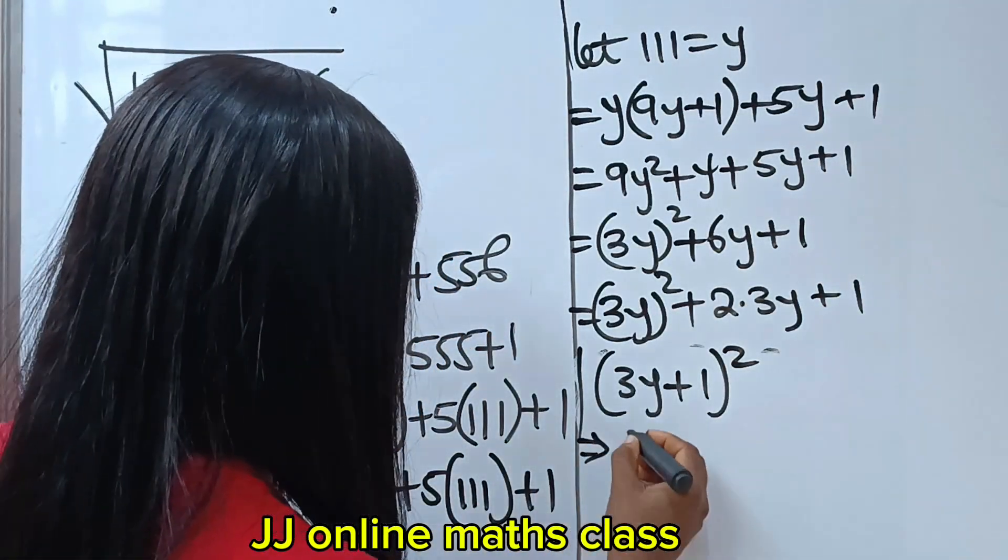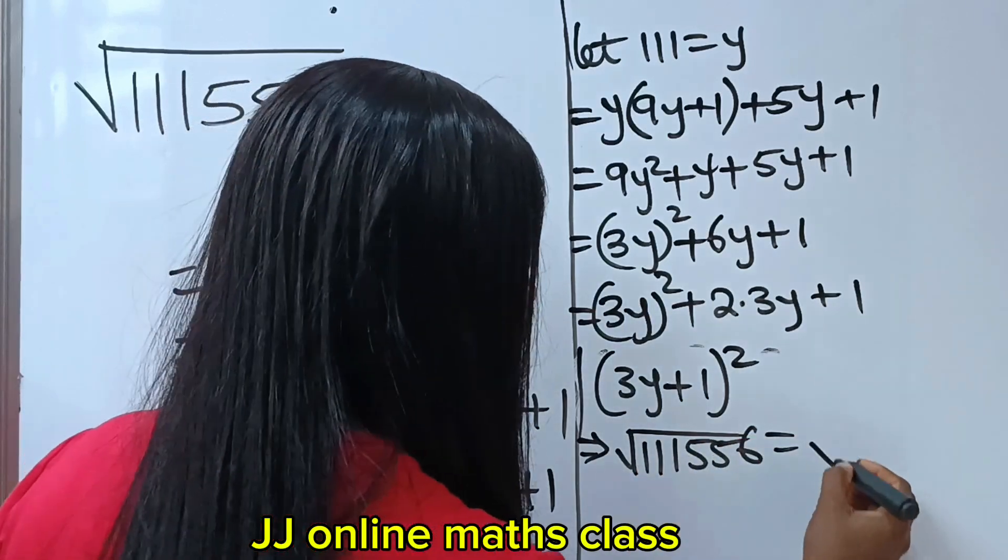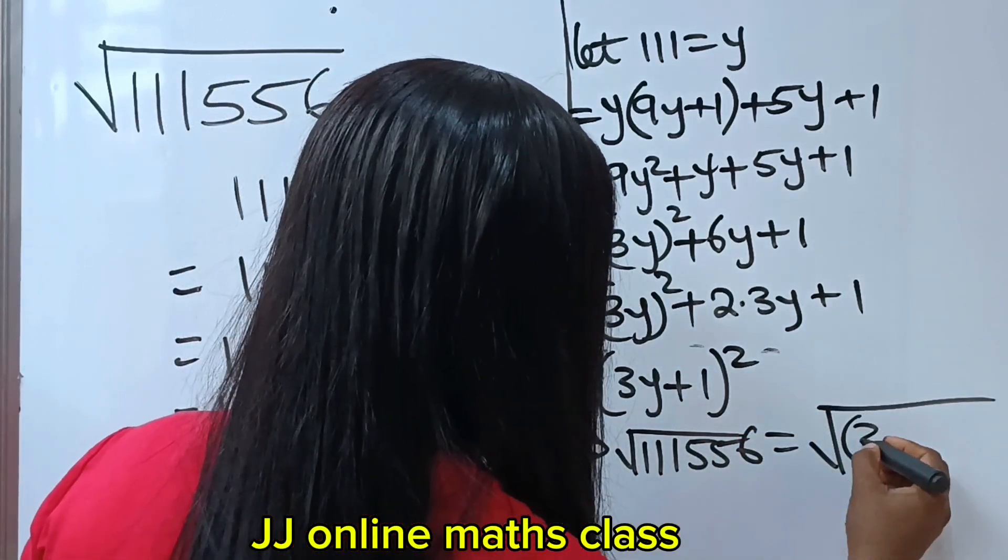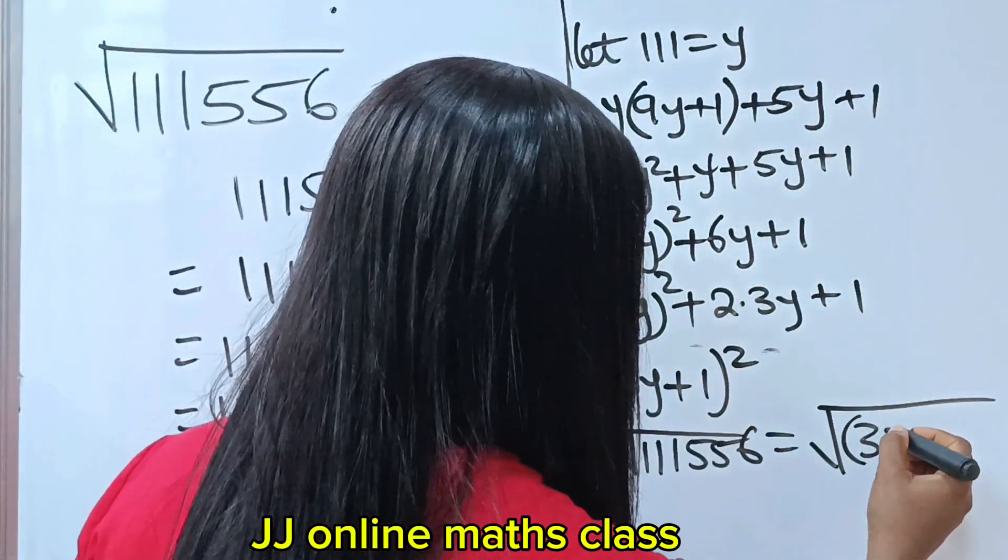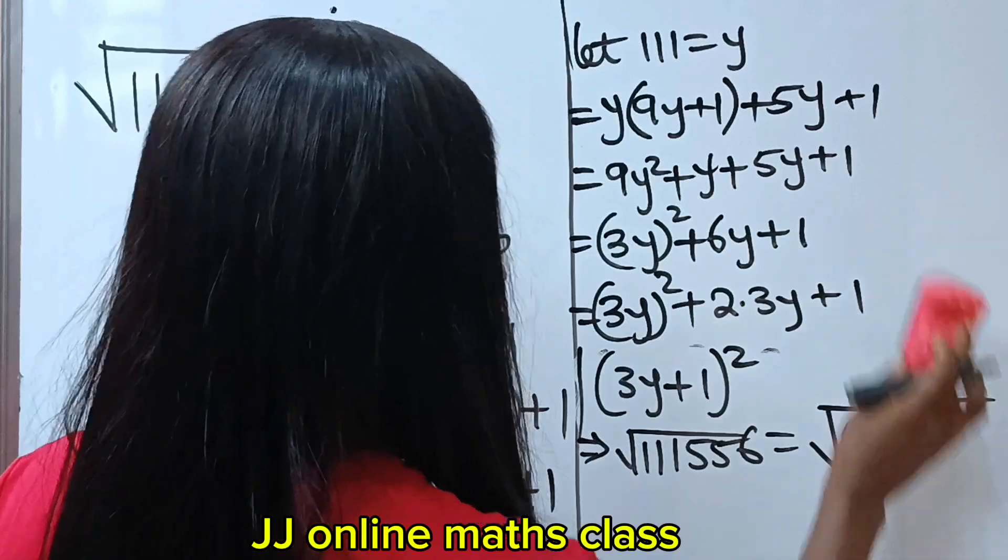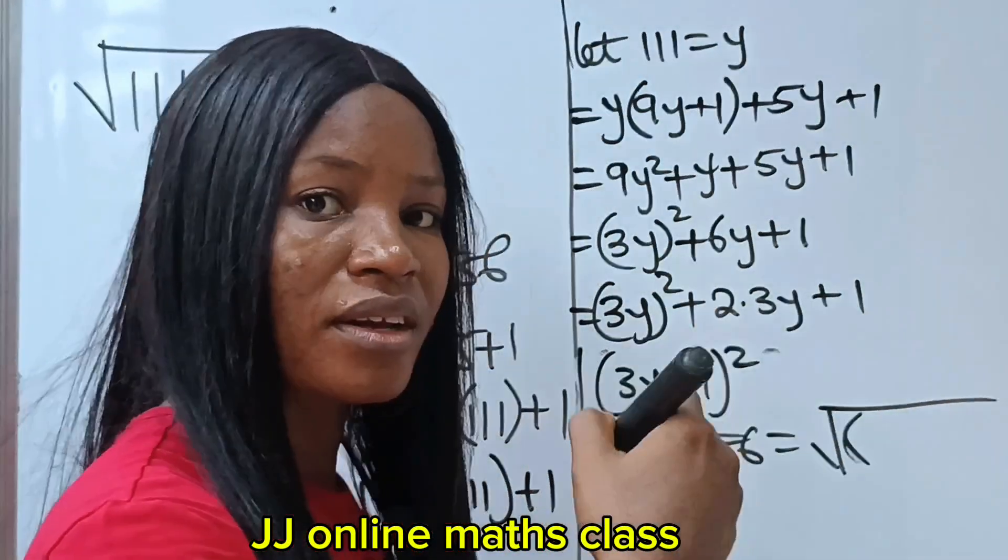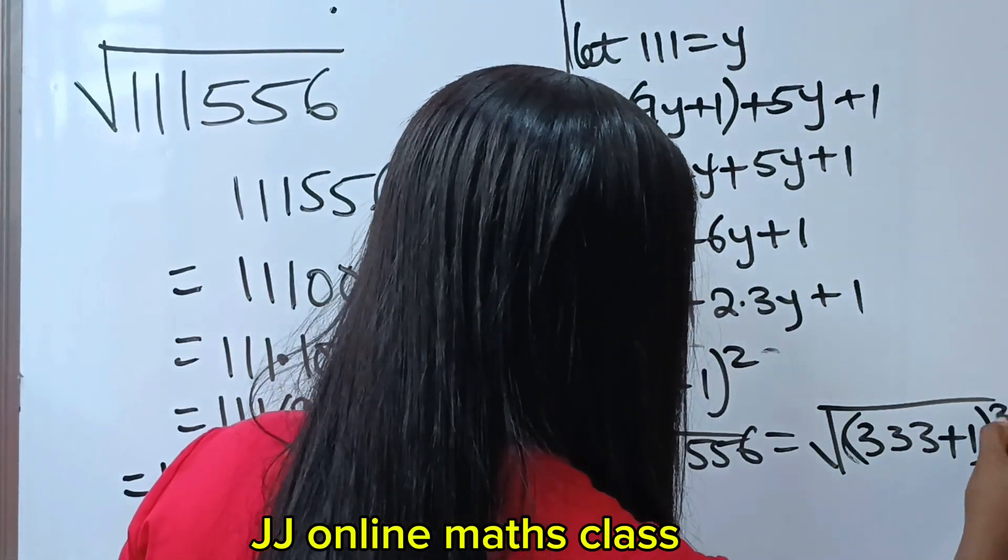So, that means that square root of 111556 is equal to square root of what? 3, remember that our y is 111, so 3 times 111, 3 times 111, which will give us 333, so 333 plus 1 all squared.